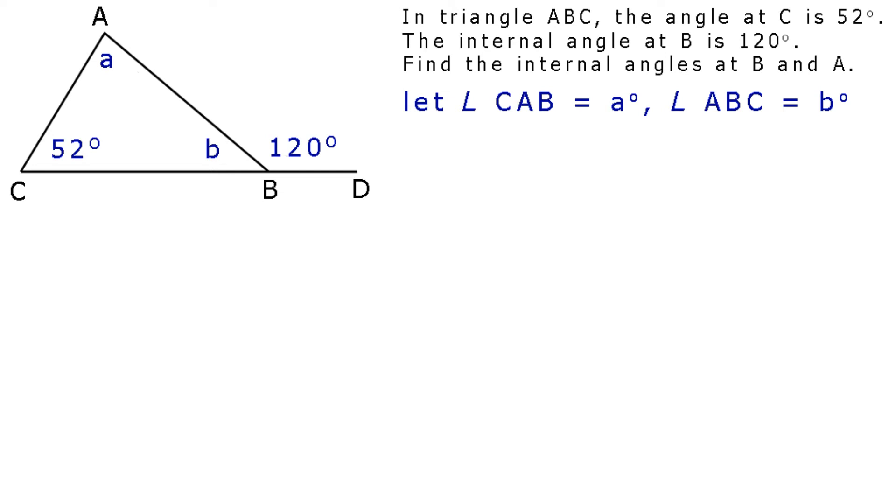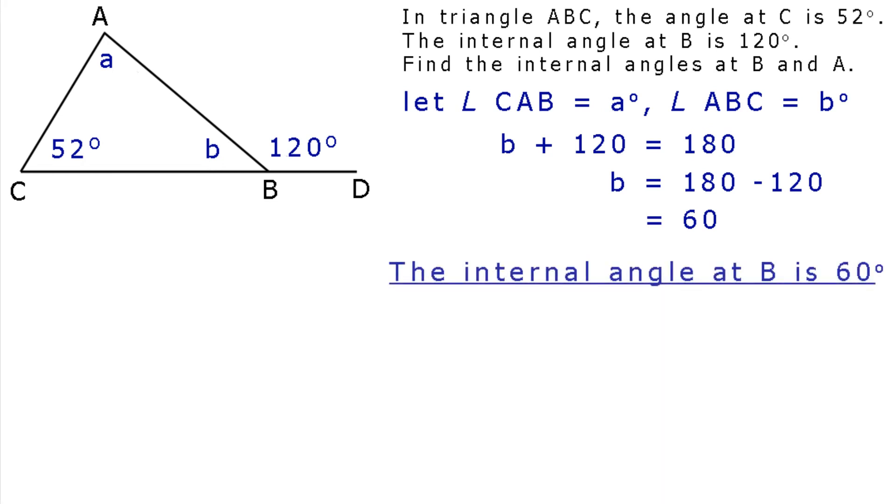Since the internal and external angles at B are in a straight line, we can write B plus 120 equals 180. Taking the 120 to the other side of the equation and changing its sign, B equals 180 minus 120. Subtracting 120 from 180 gives 60. So, B equals 60. So, we have our answer. The internal angle at B is 60 degrees.